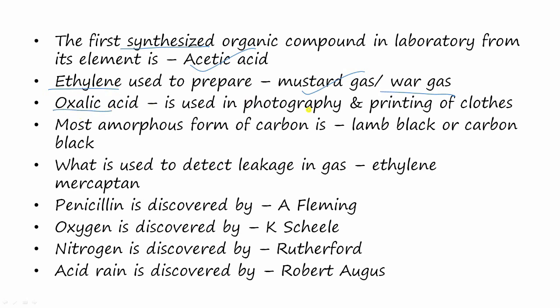Oxalic acid is used in photography and printing of clothes. The most amorphous form of carbon is lamp black, also called carbon black. What is used to detect the leakage in gas? The answer is ethyl mercaptan.